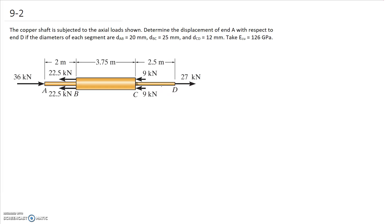So I'm going to start by drawing the free body diagram of each section by taking a cut through it to find the internal load. So let's start with considering AB.